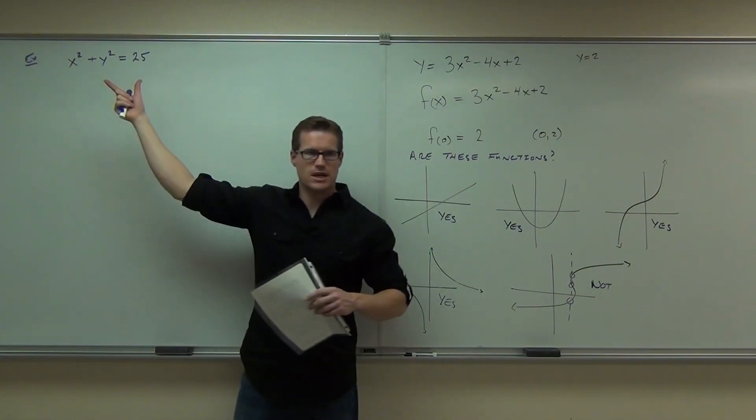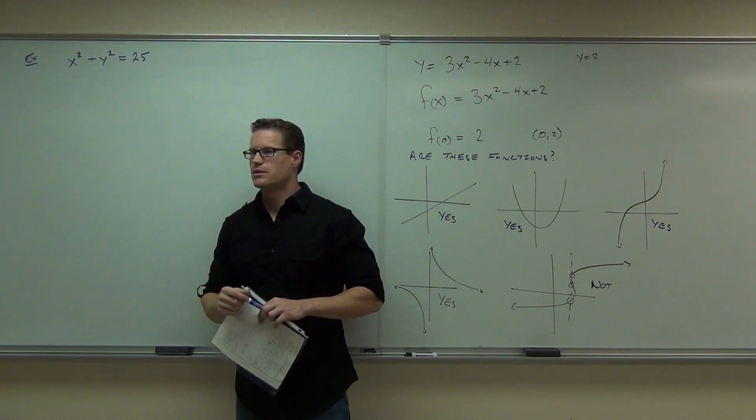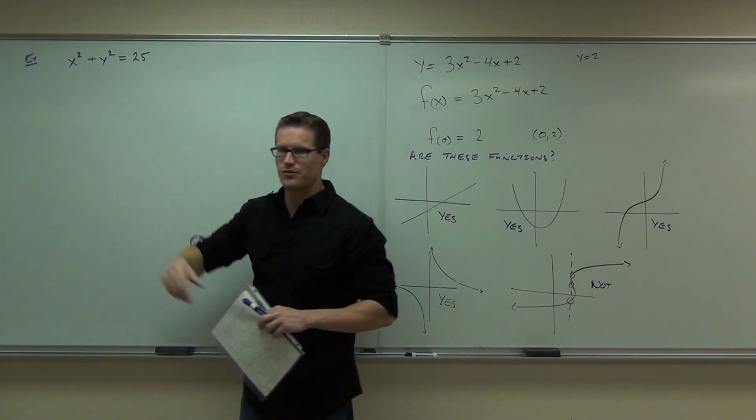X minus H and Y plus K, that would shift that around. What's your radius? Good, because we know this is the radius squared, so our radius would be 5.